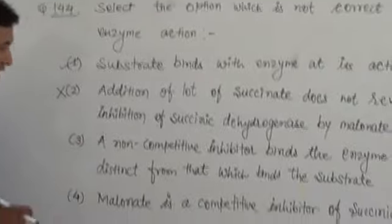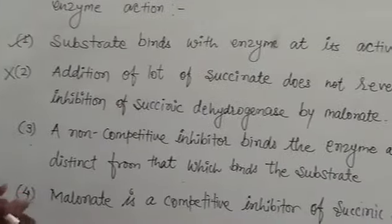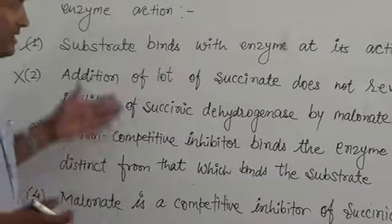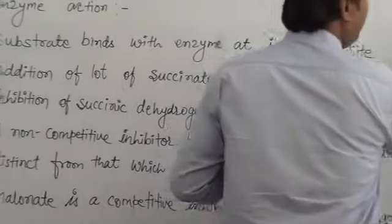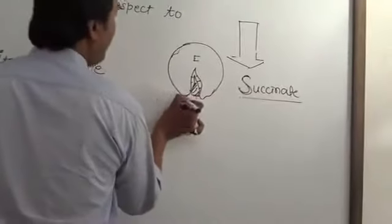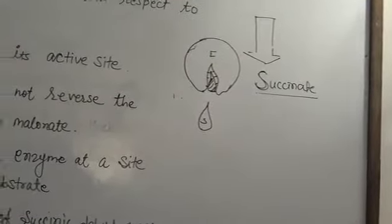Third option: A non-competitive inhibitor binds the enzyme at a site distinct from that which binds the substrate. It means in non-competitive inhibition, the inhibitor binds at another place of the enzyme. So this option is correct.